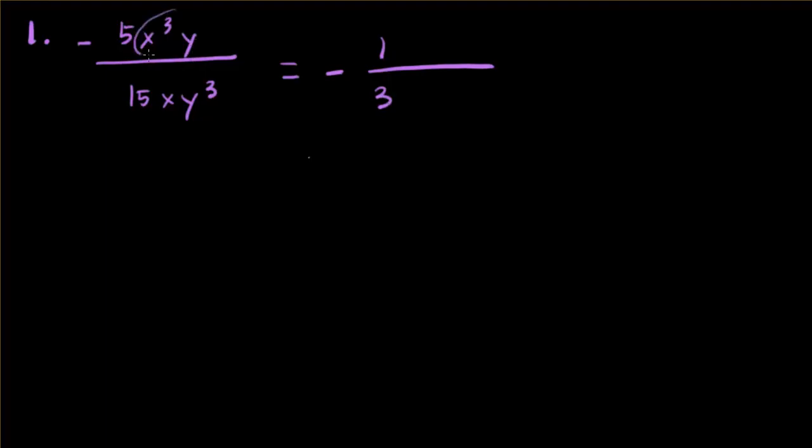We have an x to the third and an x. That means we have three x's in the numerator and one x in the denominator. When we simplify that, that becomes x to the second. We have one y in the numerator. We have three y's in the denominator. When we simplify that, that becomes y to the second.